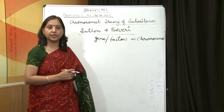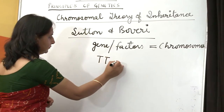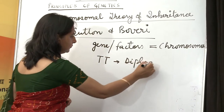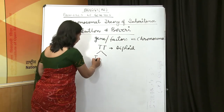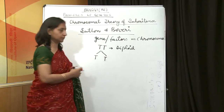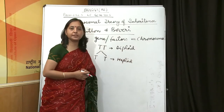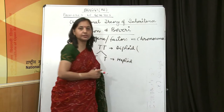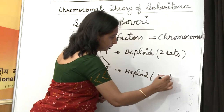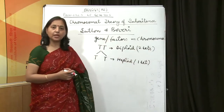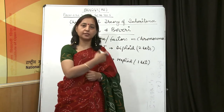We all know that the genes are found in pairs in diploid condition, and at the time of gamete formation during meiosis, they become haploid — they separate. Diploid means having two sets of chromosomes, and haploid means having one set of chromosomes. The same thing was observed when the chromosomes undergo meiosis.